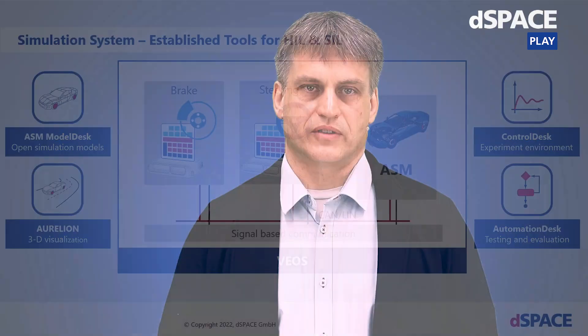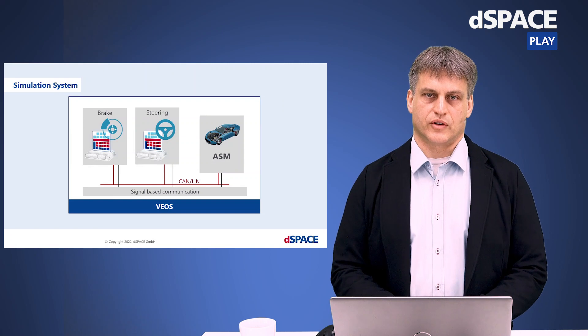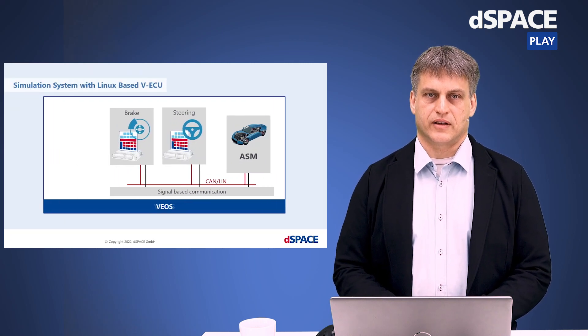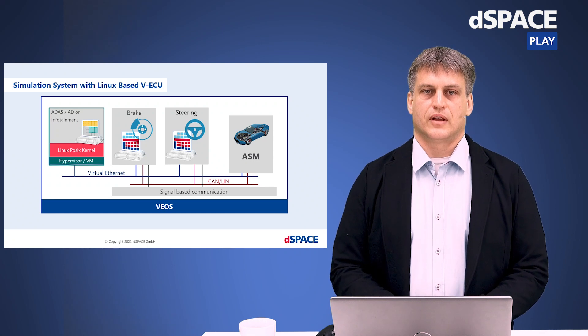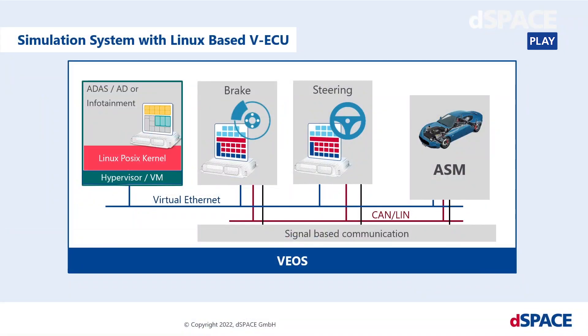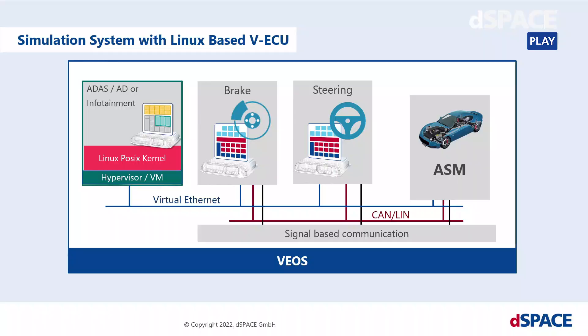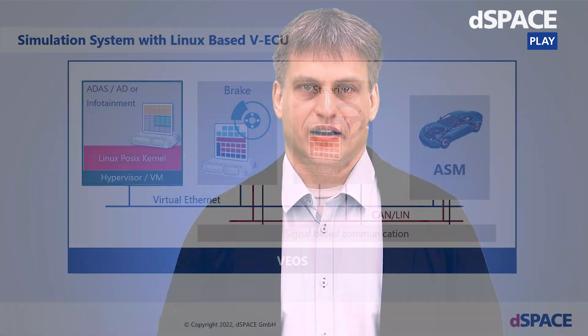In recent years, however, there is a clear trend towards new systems which assist the driver or even take over the steering wheel. These systems have quite different requirements. As a result, classical ECU architectures are not well suited for these systems. Instead, these algorithms are implemented in Linux-based control units, and networking is shifting towards Ethernet. Of course, these classic reliable controls will remain and need to be integrated with the new systems. Adaptive AUTOSAR is also addressing this area, but today I want to show you how dSpace is enabling you to integrate virtual twins of classic C code ECUs and Linux-based virtual ECUs on an Ethernet cluster.